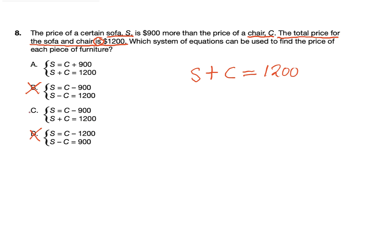I'm going to go in to see which answer choices has S plus C equals $1,200. A has that, we can eliminate B. Our answer is either A or C. The price of a certain sofa S is $900 more than the price of a chair. When you see that word than, it means the price of the chair, that variable C is first. More than means to add, and we're going to add 900. So S equals C plus 900. My answer is A. This is high emphasis, so make sure that you can model systems of linear equations.